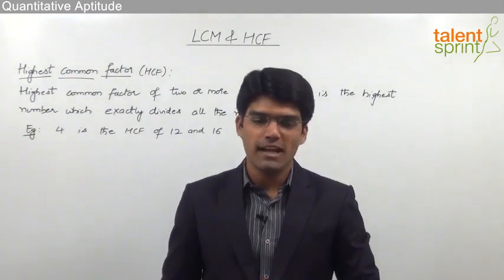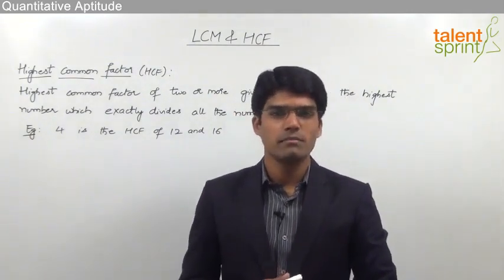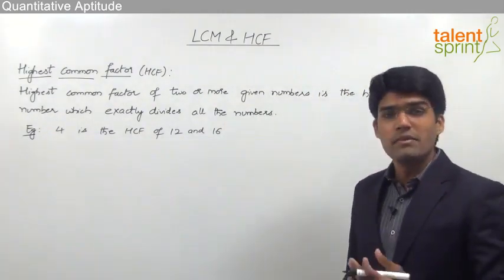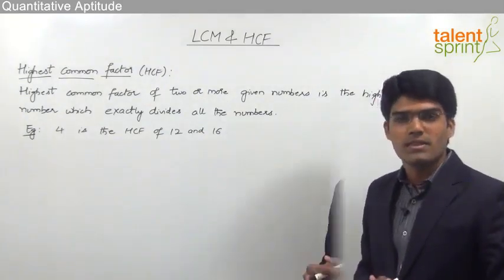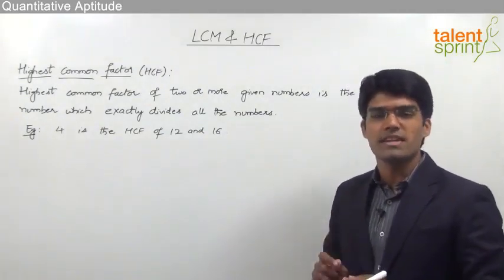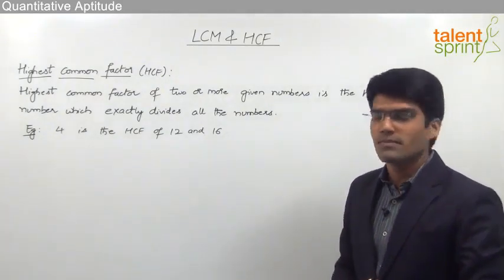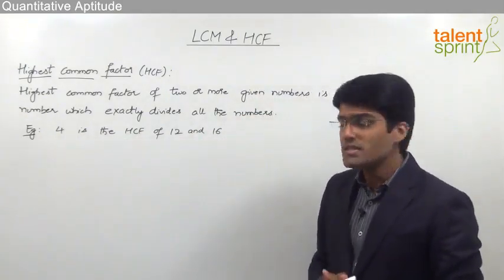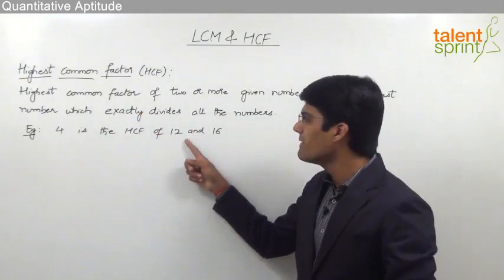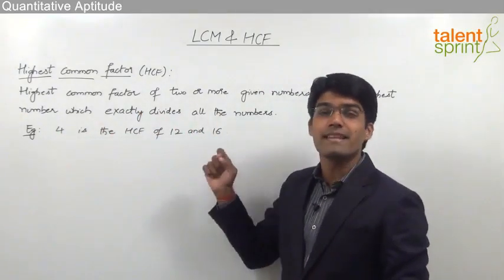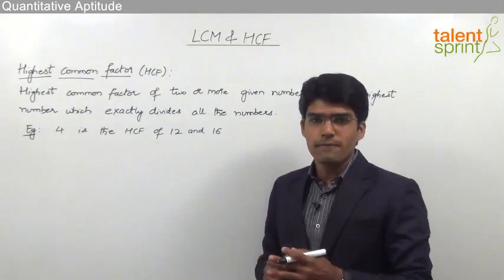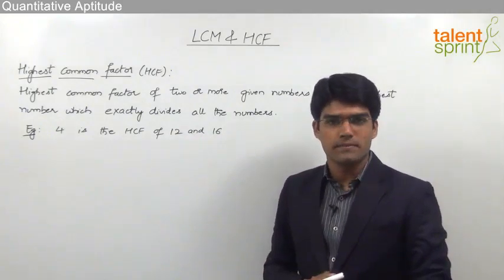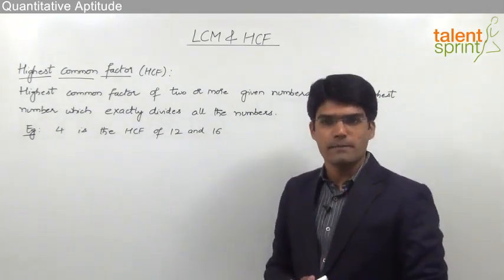Let us now learn how to find out the highest common factor of given numbers. The highest common factor of two or more given numbers is the highest number which exactly divides all the numbers. So HCF is the highest number which can divide all the given numbers. For example, 4 is the highest common factor of 12 and 16, meaning 4 is the highest number which can divide both 12 and 16 exactly.